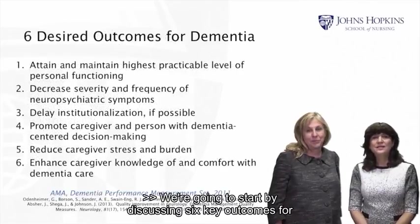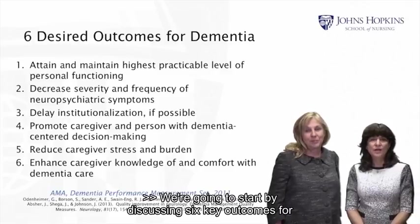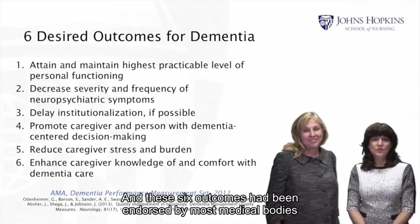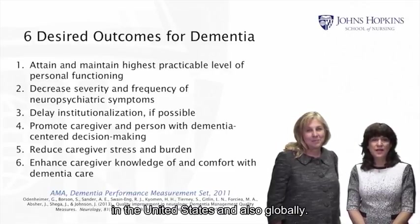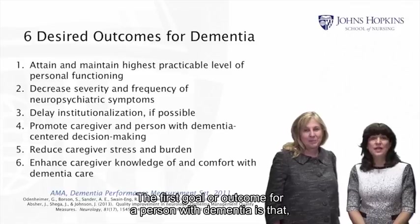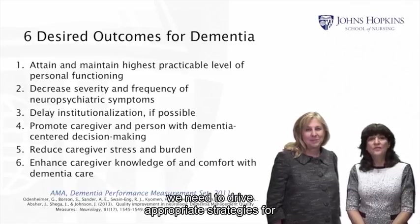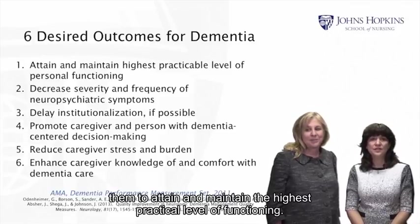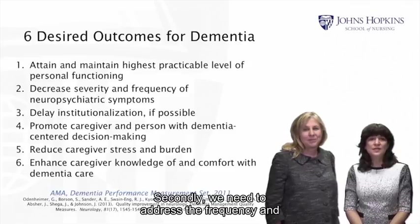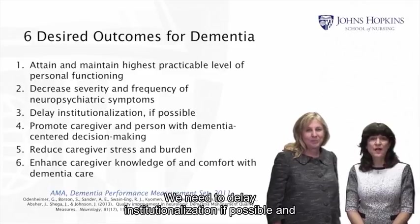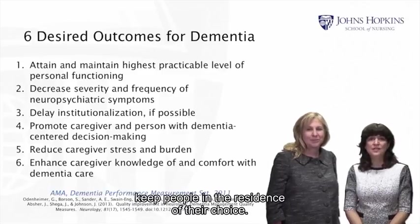We're going to start by discussing six key outcomes for any person who has dementia. These six outcomes have been endorsed by most medical bodies in the United States and also globally. The first goal is that we need to derive appropriate strategies for them to attain and maintain the highest practical level of functioning. Secondly, we need to address the frequency and severity of neuropsychiatric symptoms or behavioral challenges.